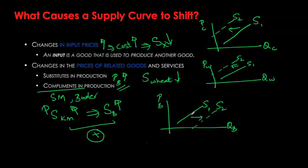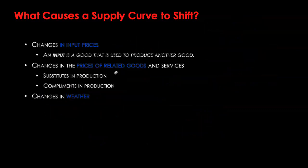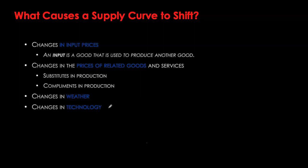Do not use the terminology of 'up' and 'down' for supply shifters — it confuses many students. Always remember: quantity increases to the right and decreases to the left. Other supply shifters include weather. A lot of agricultural production depends on weather conditions. Favorable weather increases supply at any given price, while unfavorable conditions such as severe drought or flooding cause a decrease in supply. We already used technology to illustrate changes in the supply schedule and curve.